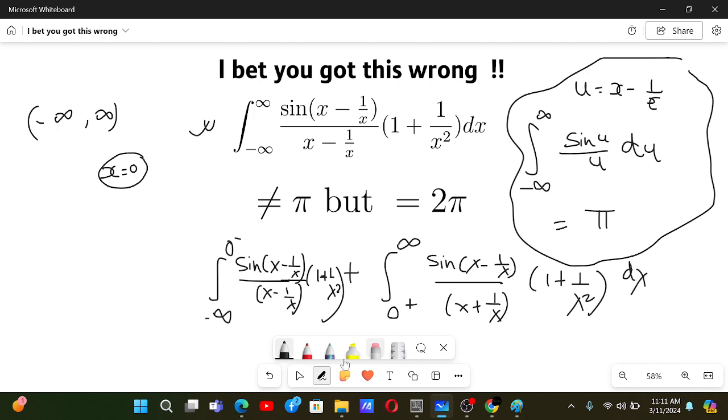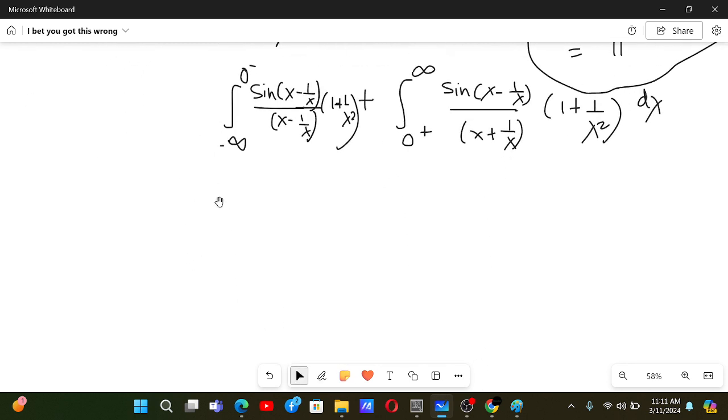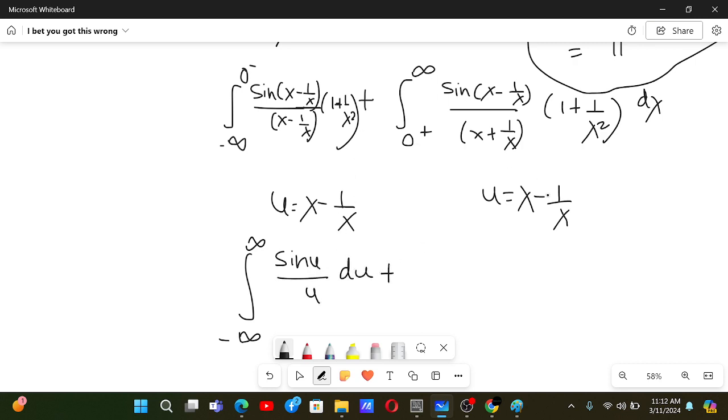Now we can use substitution. If we use substitution u equals to x minus 1 by x in both of them, let us see how the limits change. This over here is minus infinity minus minus 0, so that is basically minus infinity itself. At 0 minus, this is 0 minus, this is minus infinity, so plus infinity. And then sin u by u, and this over here is just du.